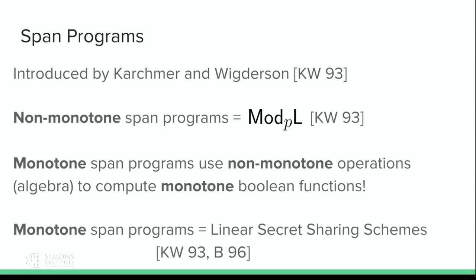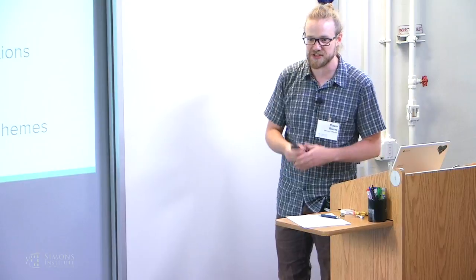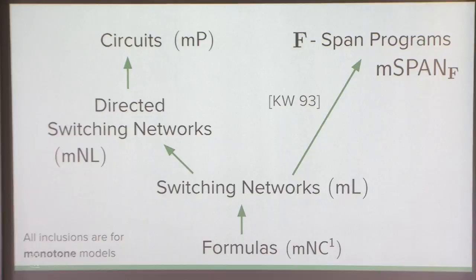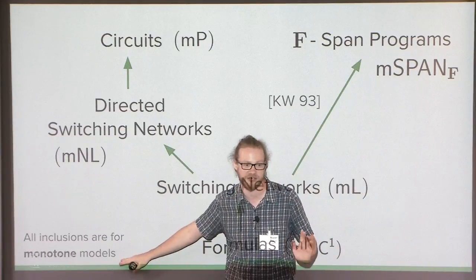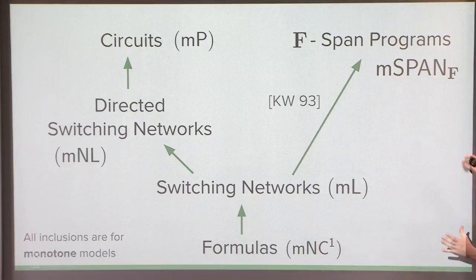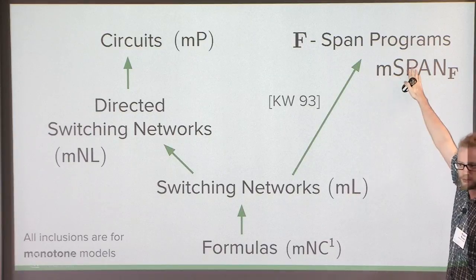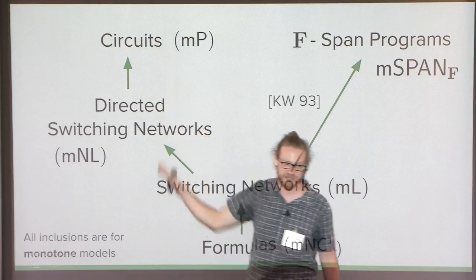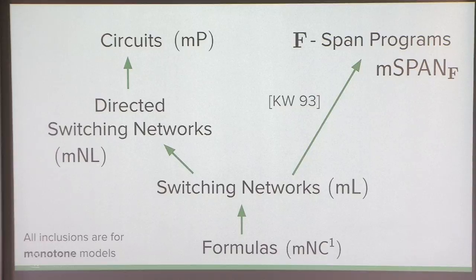Another reason that monotone span programs are interesting is that they have tight relations to cryptography in the form of linear secret sharing schemes. It turns out that the size of a monotone span program computing some Boolean function is exactly the same as the amount of information that needs to be shared in a linear secret sharing scheme. So proving lower bounds and understanding their complexity is a very natural task. Here's a picture of how the standard circuit models relate to span programs — these are inclusions talking about monotone models.